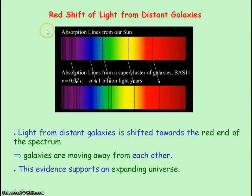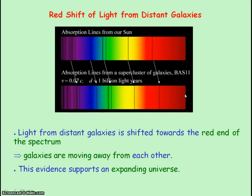The red shift of light from distant galaxies represents a shift in the absorption lines towards the red end of the spectrum, which provides evidence that galaxies are moving away from each other and supports the idea of an expanding universe.